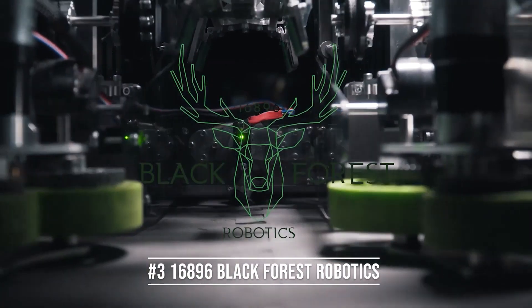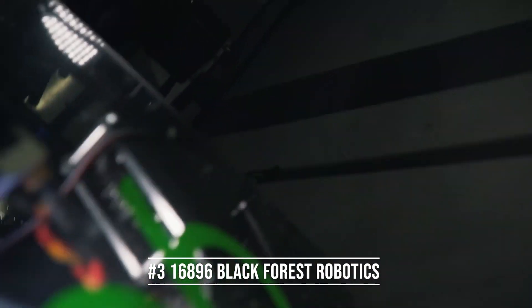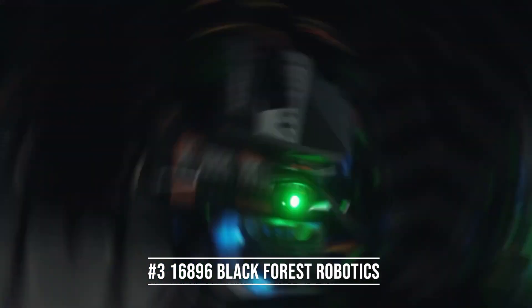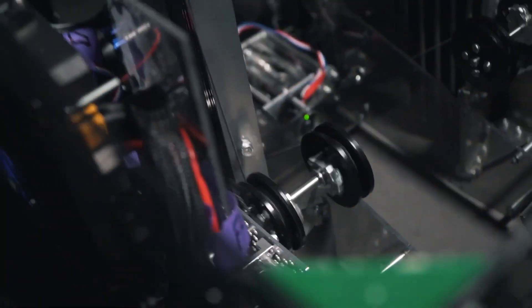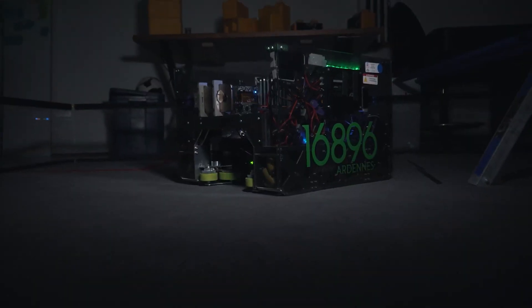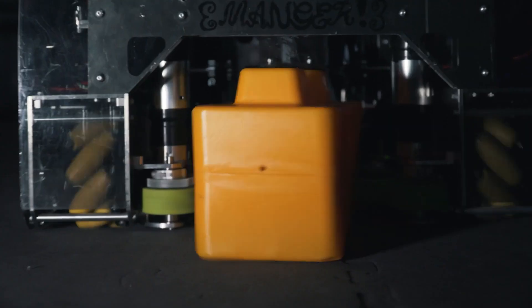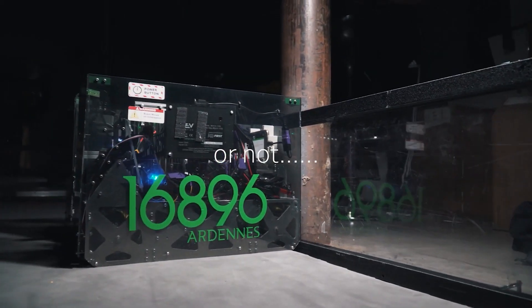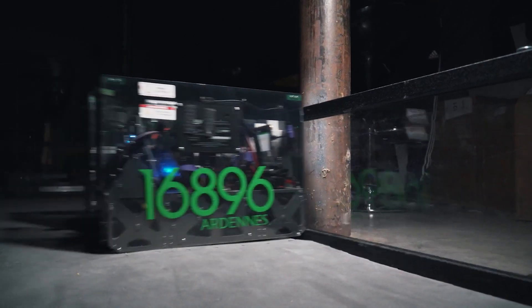Starting out the top three we have team 16896 Black Forest Robotics and their Skystone reveal. This reveal gave me goosebumps. The beginning montage where they have super smooth camera motion and amazing lighting really shows off how amazing looking their robot is. They do a great job retiming the clips to make them almost seem like a fluid and overall show off tons of features of their robot in a short amount of time. They also added some great humor at the end and the overall aesthetic of everything but their robot being dark really paid off.